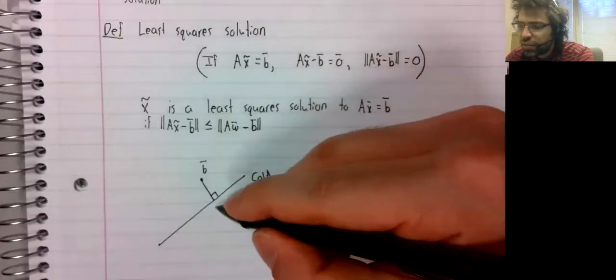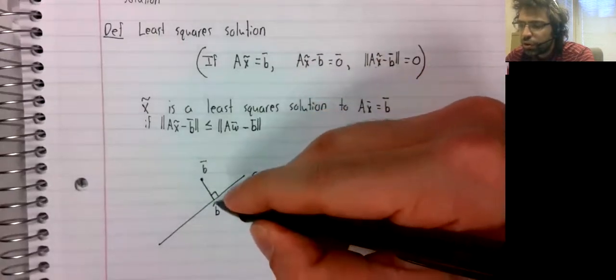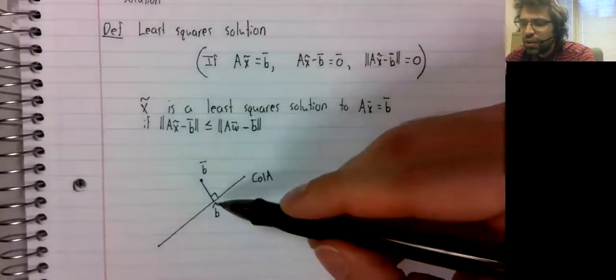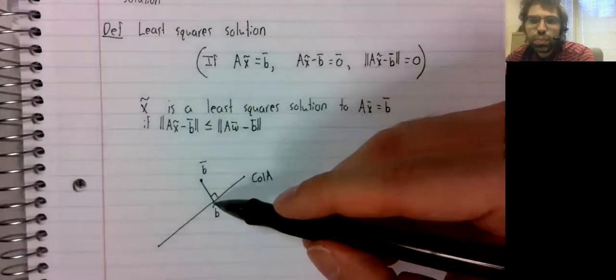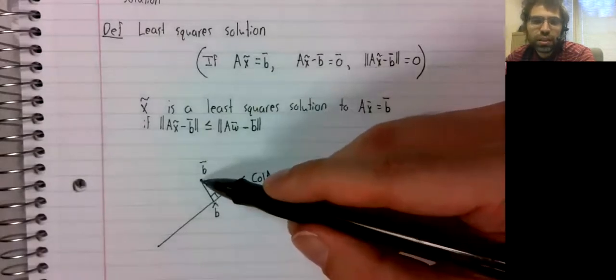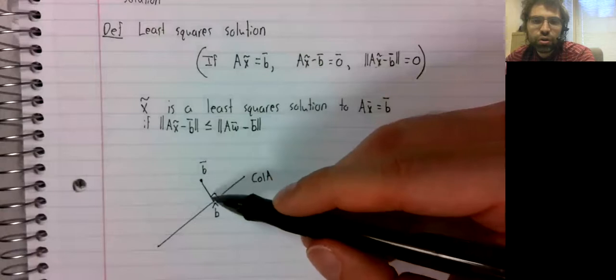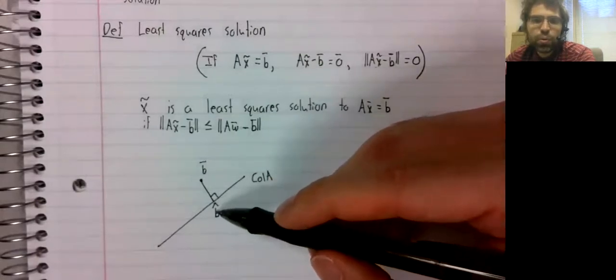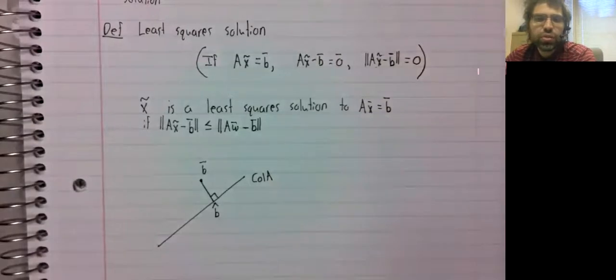You project b orthogonally onto the column space. This is as close as it's possible to be to this vector and still have Ax equals this, have a solution.